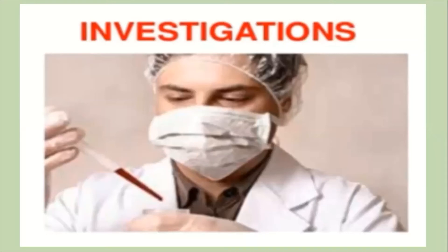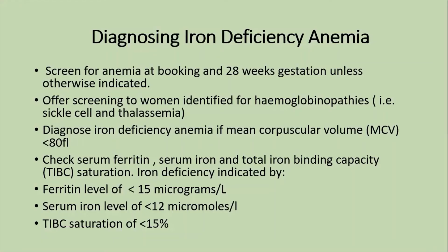For investigations, screen for anemia at booking and at 28 weeks of gestation. Do a complete blood count. If the patient has a hemoglobinopathy such as thalassemia or sickle cell disease, screen more frequently. Diagnose iron deficiency anemia if mean corpuscular volume is less than 80, serum ferritin is less than 50 micrograms per liter, serum iron is less than 12 micromoles per liter, and total iron binding capacity saturation is less than 15%.